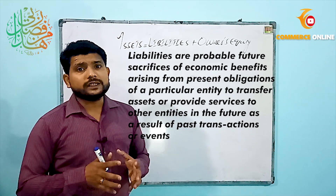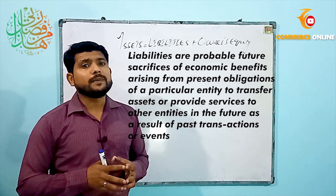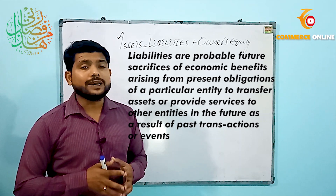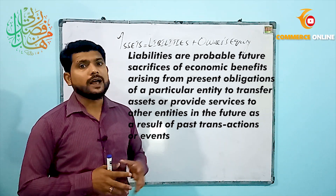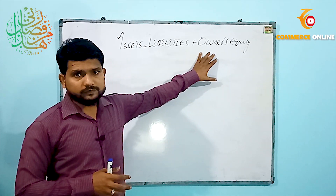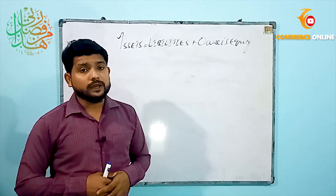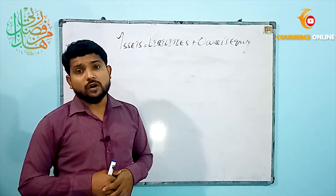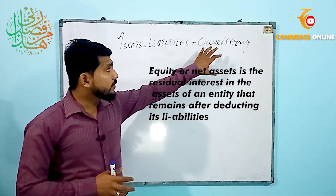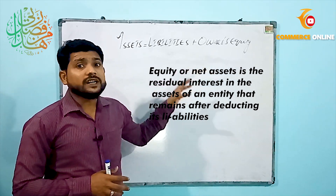Liabilities in a nutshell — we can say that these are what the company will owe in the future. The last part is owner's equity.